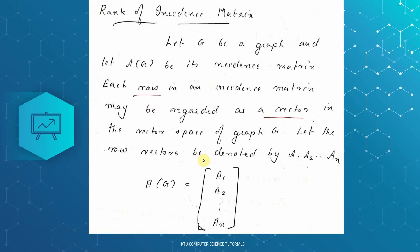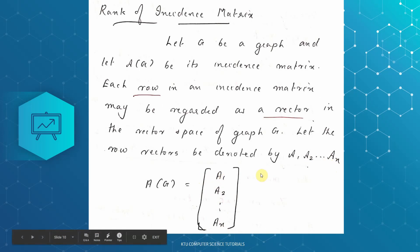These row vectors are a1, a2, and so on up to an. This is the first vertex, the second vertex, the third vertex, and the nth vertex. These vectors hold values corresponding to the edges.